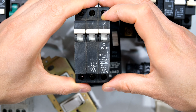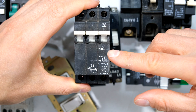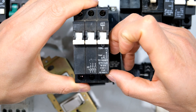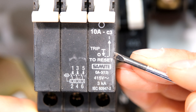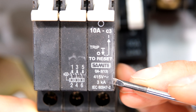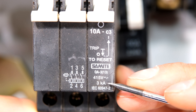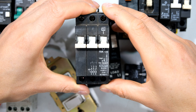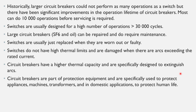A circuit breaker is different. It says 10 amps on this one, meaning at 10 amps it will automatically trip and open the circuit. But on the front or side of the circuit breaker we see additional values — it says 3 kilo-amps, meaning this circuit breaker is able to deal with a fault current up to 3,000 amps.